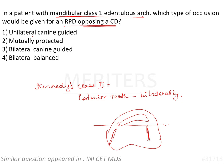There are a few concepts to revise before answering. The options are: unilateral canine guided, bilateral canine guided, mutually protected, and bilateral balanced occlusion. Let's briefly discuss what each of these means.